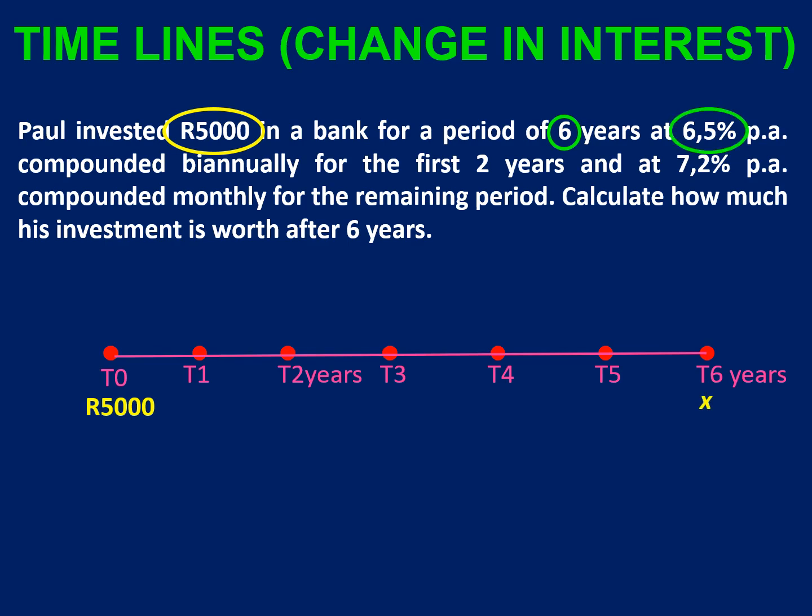Now remember we have to express that as a decimal so you'll go 6.5 divided by 100 to get 0.065, and because the interest is compounded biannually we are going to divide the interest rate by two but multiply the years by two.